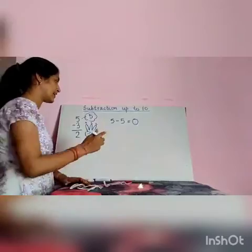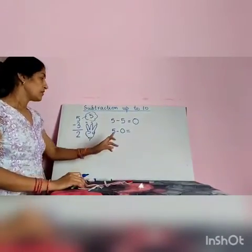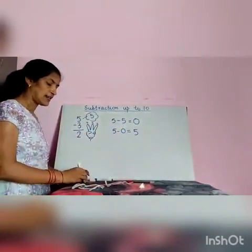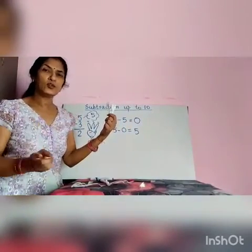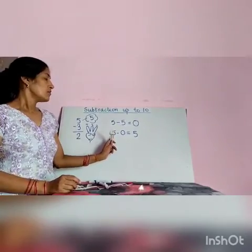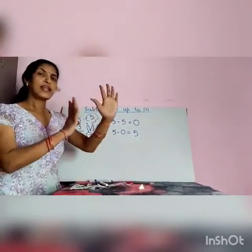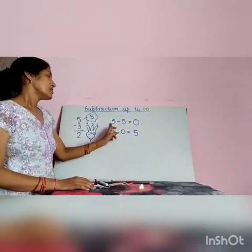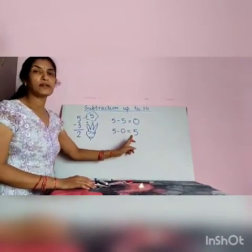The second property says that when 0 is subtracted from a number, we always get the number itself. For example, if I have 2 and give away 0 — we are taking away 0 — so 2 will remain. So 5 minus 0 is 5, 3 minus 0 is 3, 2 minus 0 is 2, 9 minus 0 is 9. So the two properties say: subtract a number from itself and we get 0; subtract 0 from any number and we get the same number.